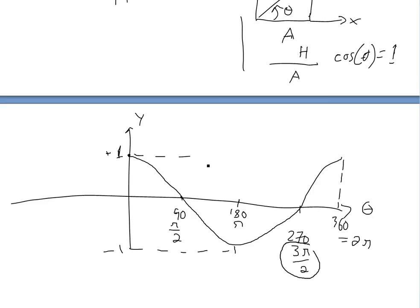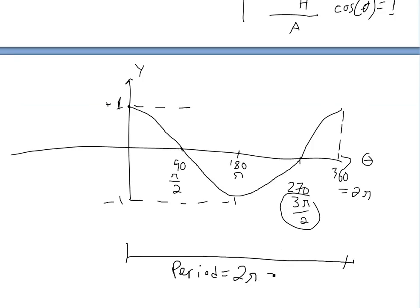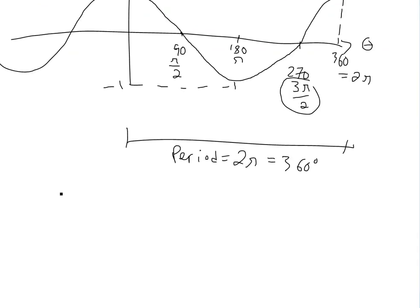So the period — that's what it's called — is when it repeats. The period equals 2 pi, or 360 degrees. See my other video on radians for more detail. Sine and cosine — they all repeat.